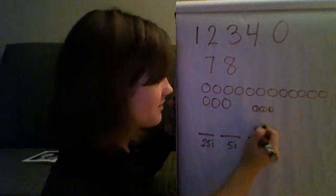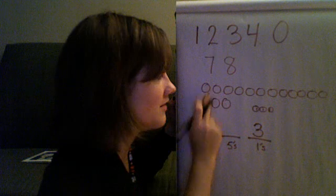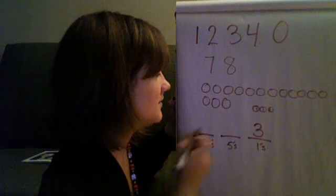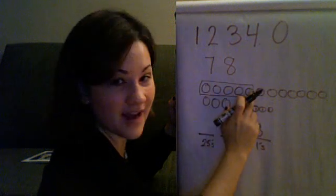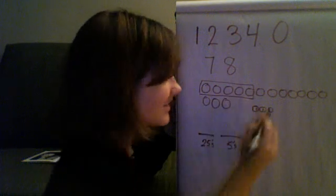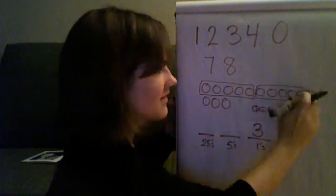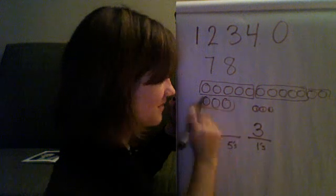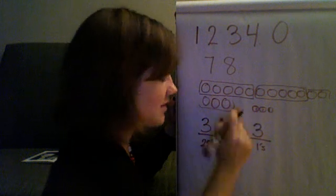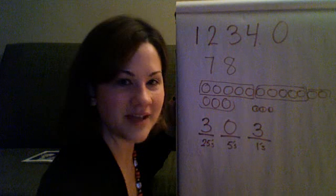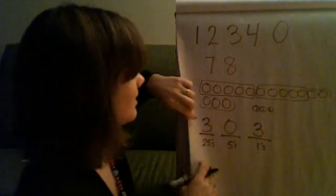Looking at our nickels, I can find groups of five fives. Here's one group of five fives — that's a 25. There's another group, and another group, so I have three twenty-fives. I have three ones left over, and no fives by themselves. So 78 written in base 5 is 3-0-3: three twenty-fives, zero fives, three ones.